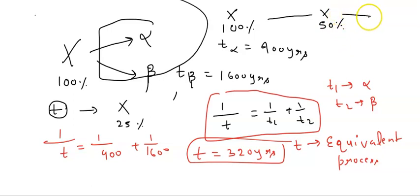We need to calculate the time after which 75% of the substance disintegrates. If X is 100% initially, then after how much time does it become 50%? After 320 years.